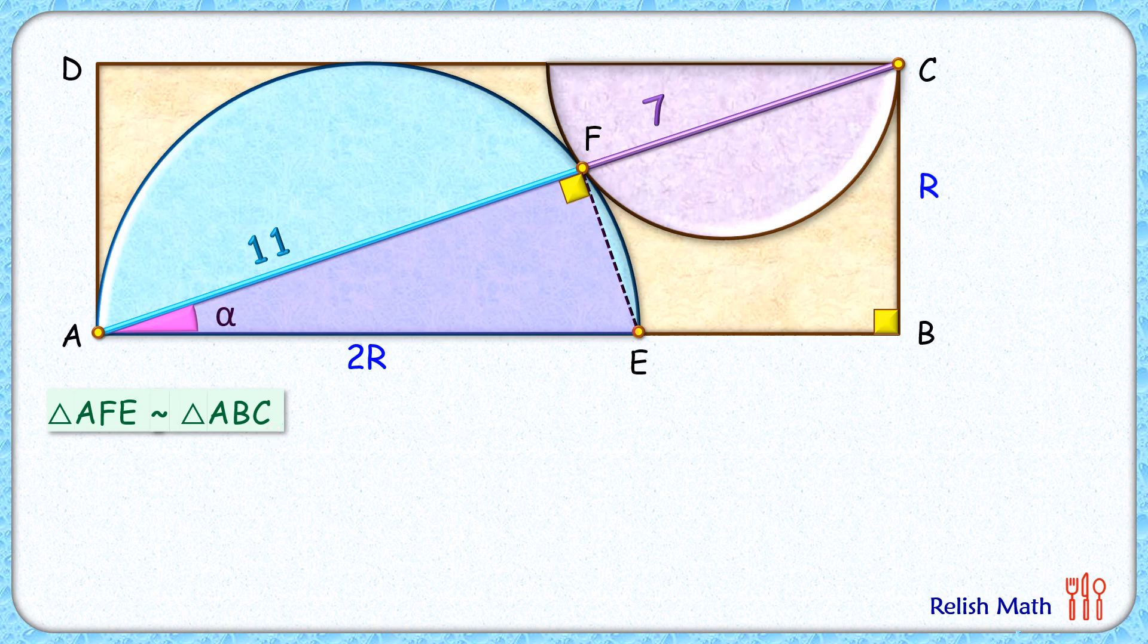Or AE upon AF will be equal to AC upon AB. Now putting the values here, AE is 2R centimeters, AF is 11 centimeters, AC length is 18 centimeters, and AB length is unknown to us.